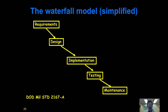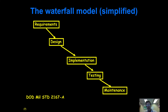The waterfall model — the very first kind of software process model — was the notion that first you develop requirements; given the requirements, you develop a design; given the design, you develop an implementation. Once you have an implementation, you test it. And when it's all tested and working correctly, it goes into a maintenance mode.